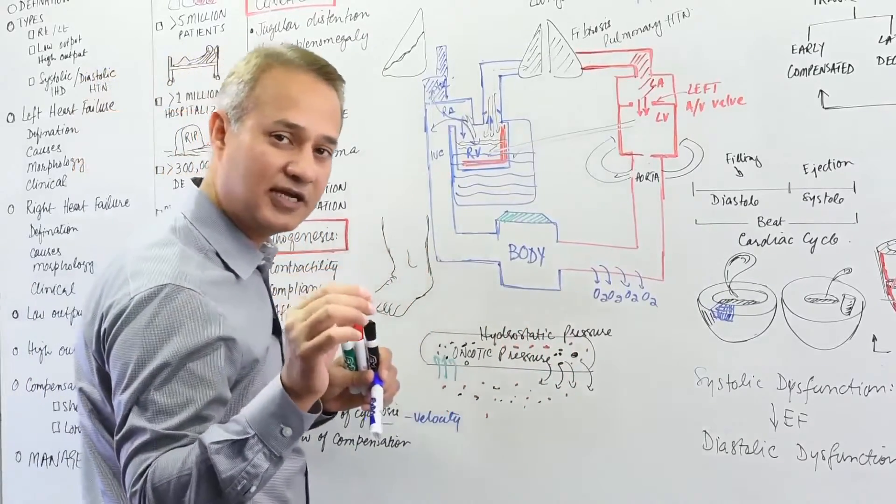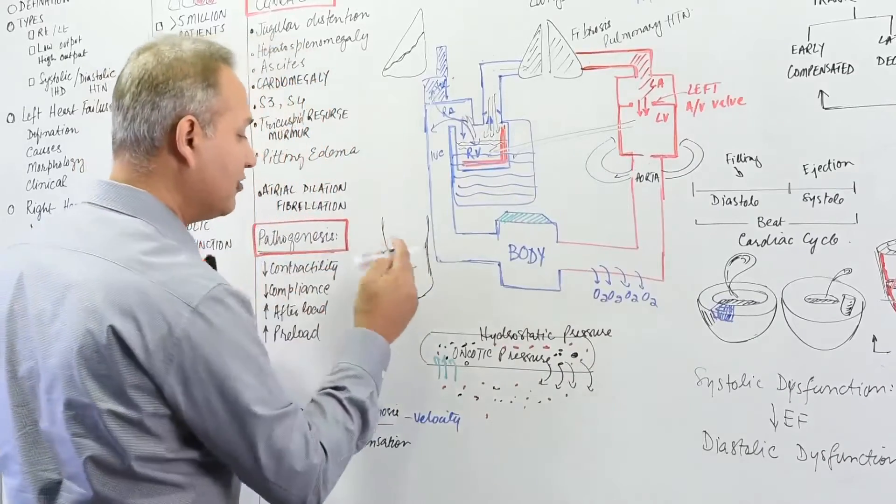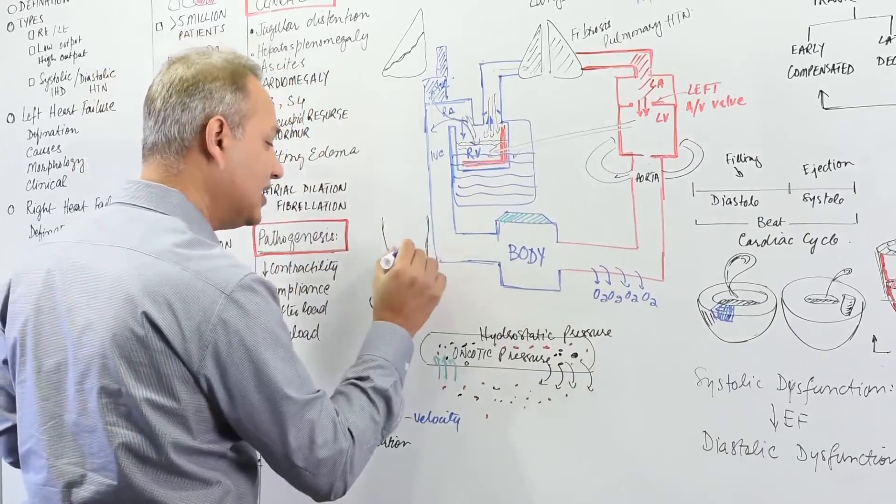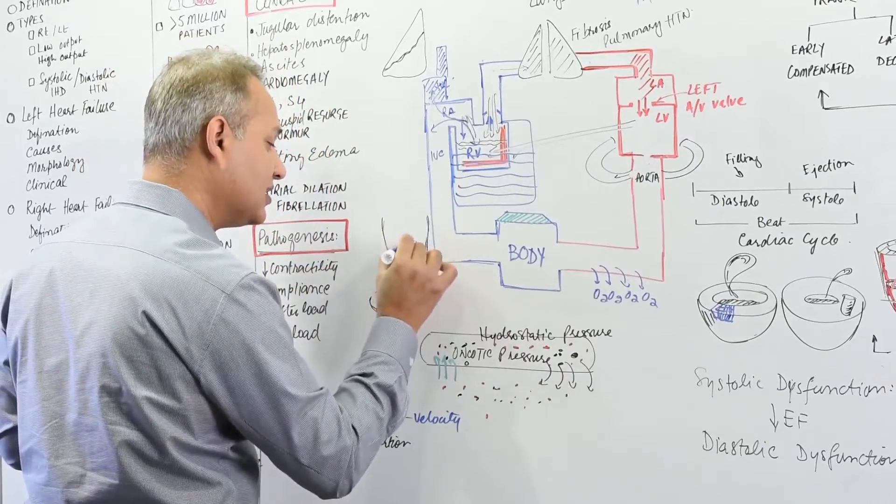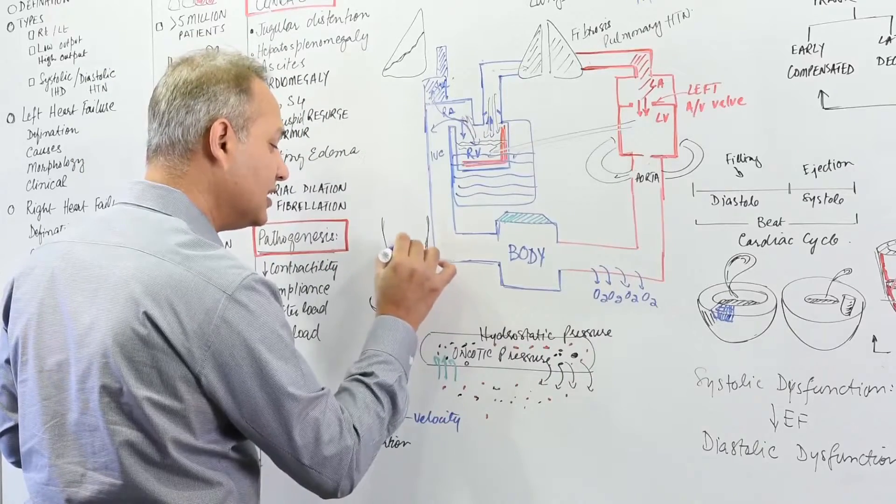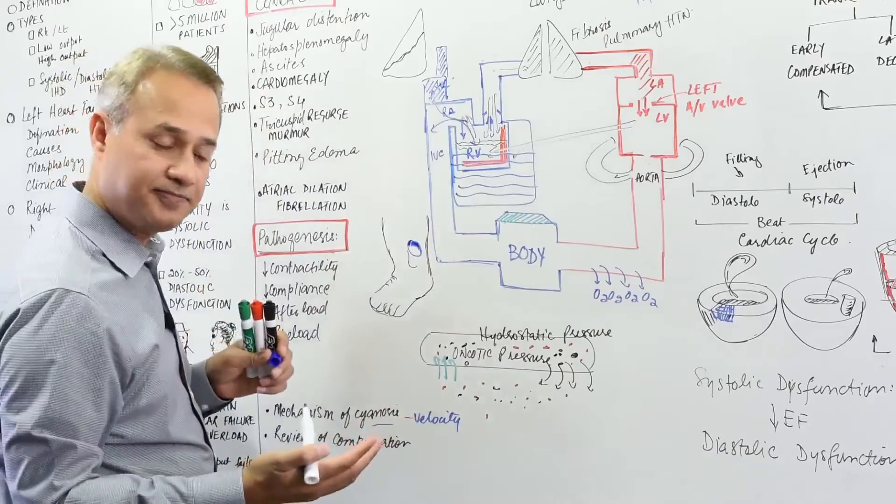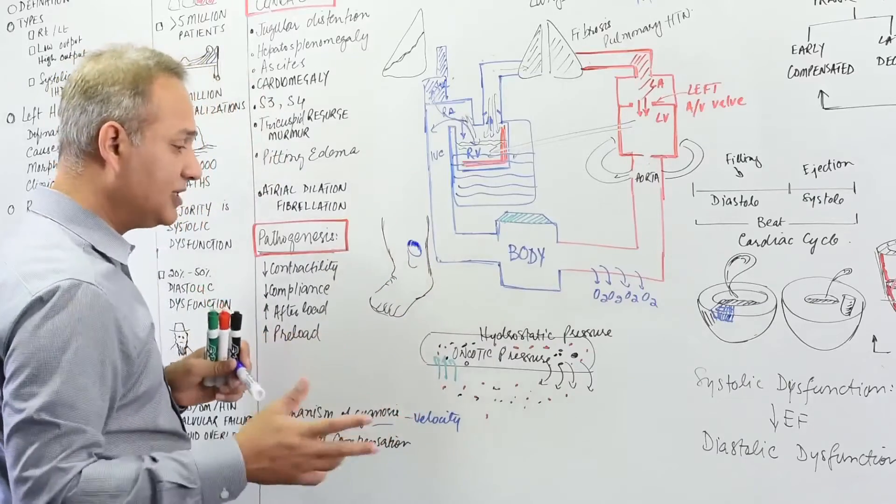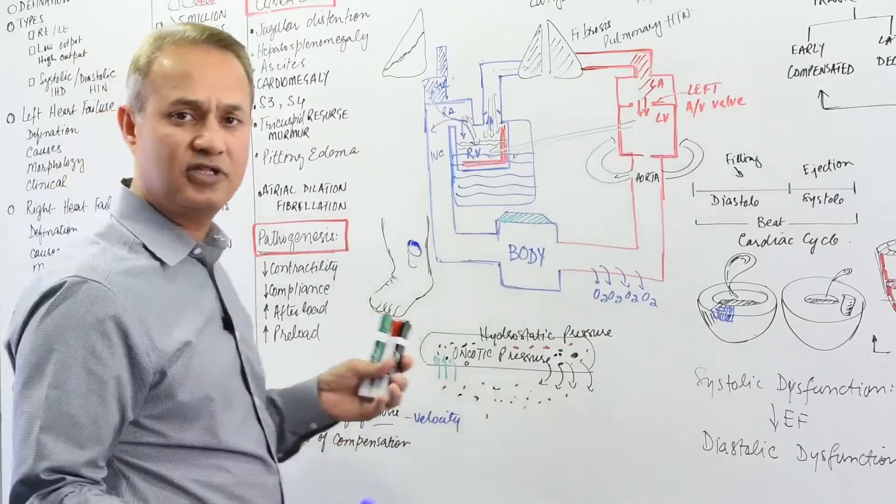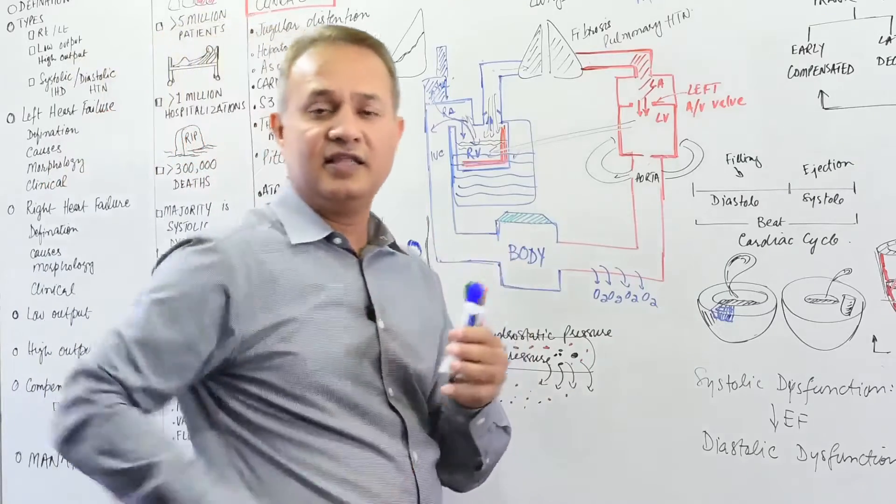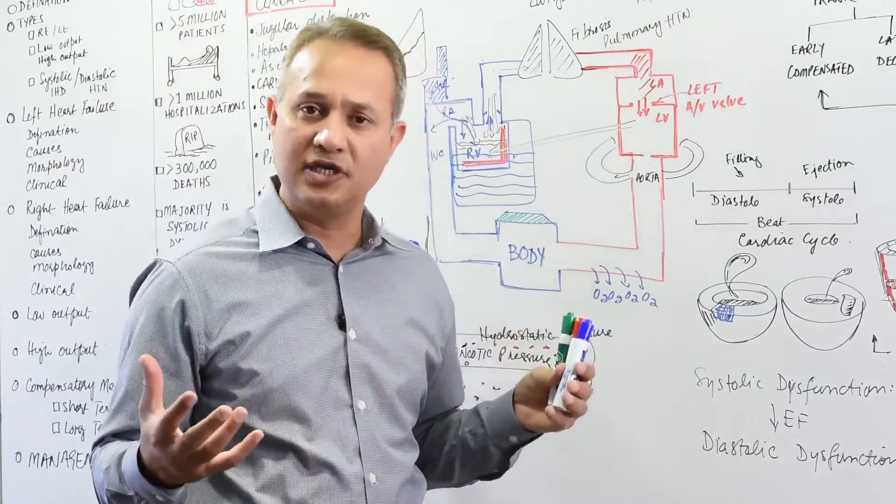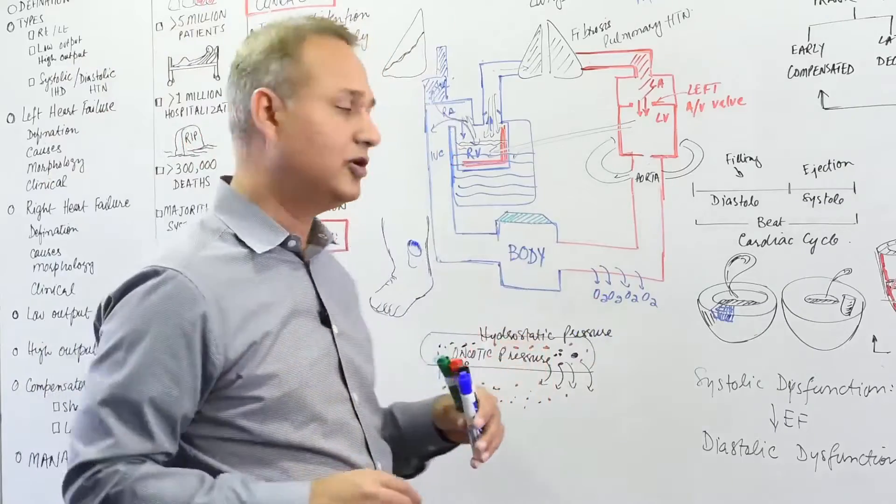In another 30 to 40 seconds, you would actually see where you were pressing, you will see a small depression. That depression will refill, but that is what is called pitting edema. You will see the pitting edema in the pedal area, especially on the gravitation. If the patient is lying, then presacral area would show the edema. The dependent part of the body would show edema.